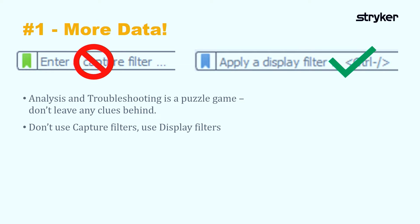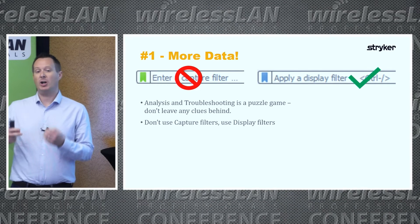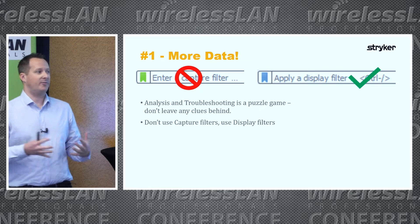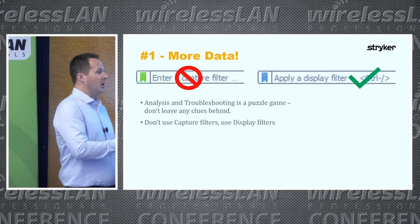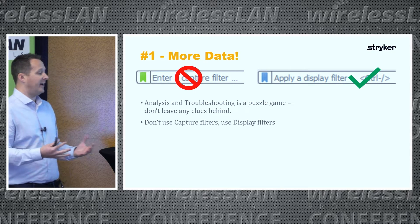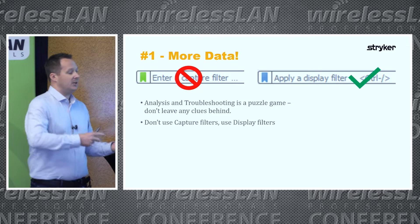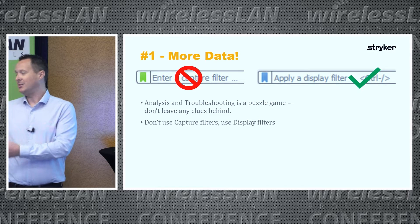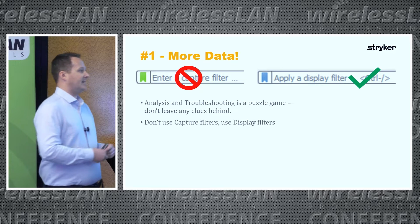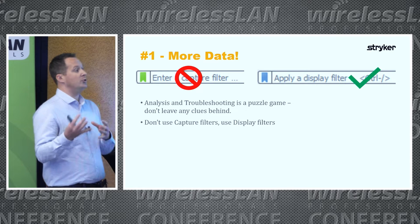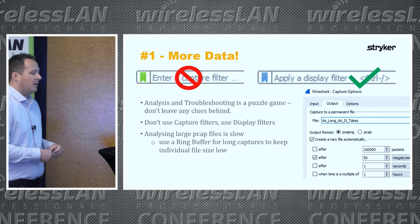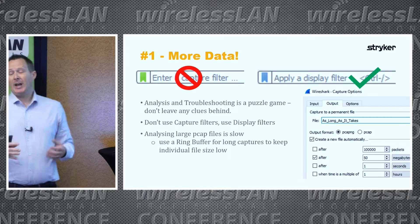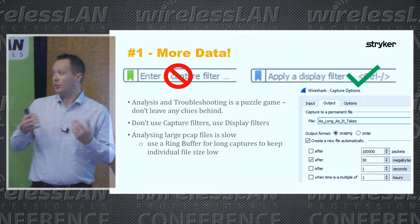Analysis is a puzzle game — you don't want to leave any clues behind. Do not use a capture filter, because that tells Wireshark only to capture the frames you've filtered for. We want every frame available, so don't use capture filters. When you come to analyze later, apply display filters instead — that way you get all the data and can discard the clues you decide you don't need.